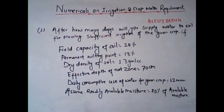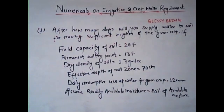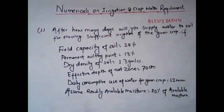Here we are presented with a question: after how many days will you supply the water to the soil for ensuring sufficient irrigation of the given crop? The data given is: field capacity of the soil is 28%, permanent wilting point is 13%, dry density of the soil is 1.3 g/cc, effective depth of the root zone is 70 cm, and the daily consumptive use of water for the given crop is 12 mm. Assume that the readily available moisture is 80% of the available moisture.